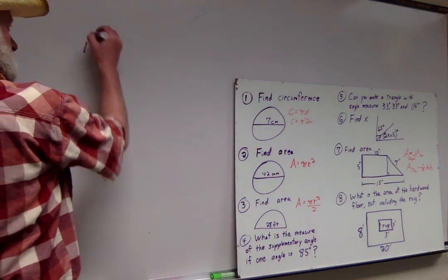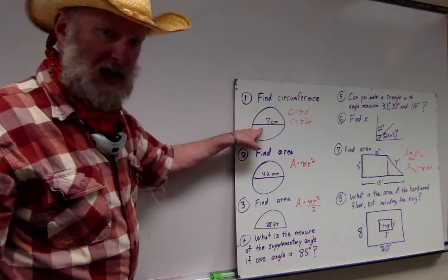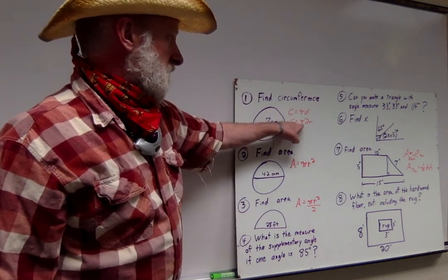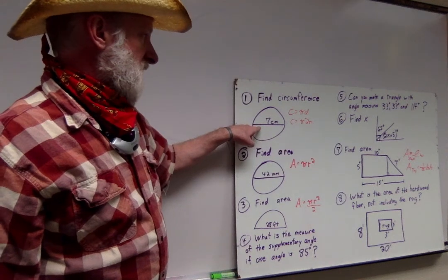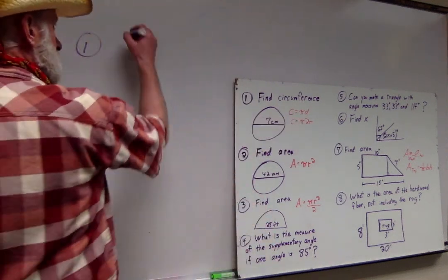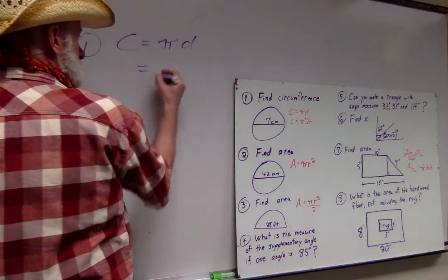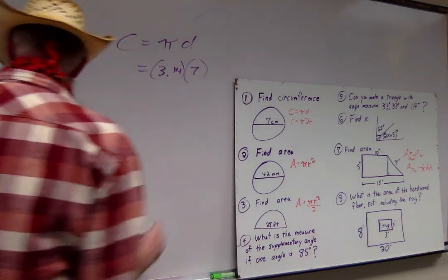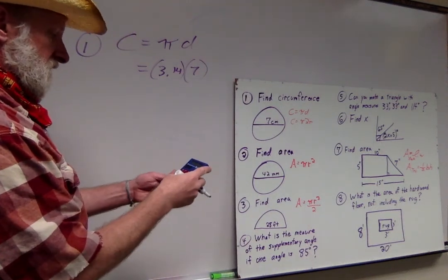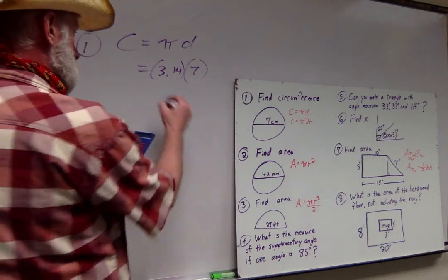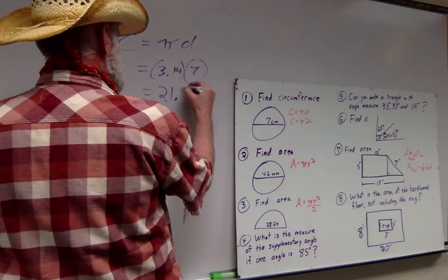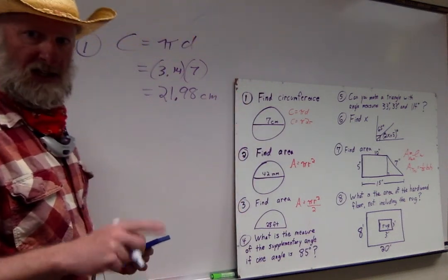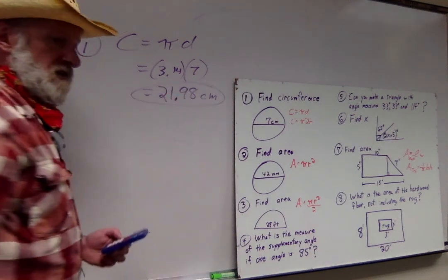Number one everybody, you're giving me the circle with the diameter. I can use either one of these formulas. Since you're giving me the diameter, I'm going to use C equals pi times the diameter. Pi is 3.14, diameter is 7. So, 3.14 times 7 equals 21.98 centimeters. Not squared, because that's just the distance around.